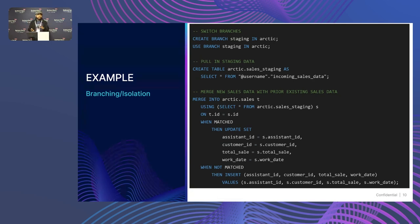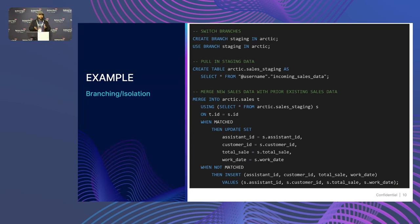Now I've theoretically ingested the data, but I haven't had a chance to audit it or run any checks. But I don't have to worry about that, because all of this occurred on the branch. All my BI dashboards and everyone's notebooks are unaffected — their data is querying the main branch, not the staging branch. I don't have to worry about anyone calling five minutes later asking what happened.